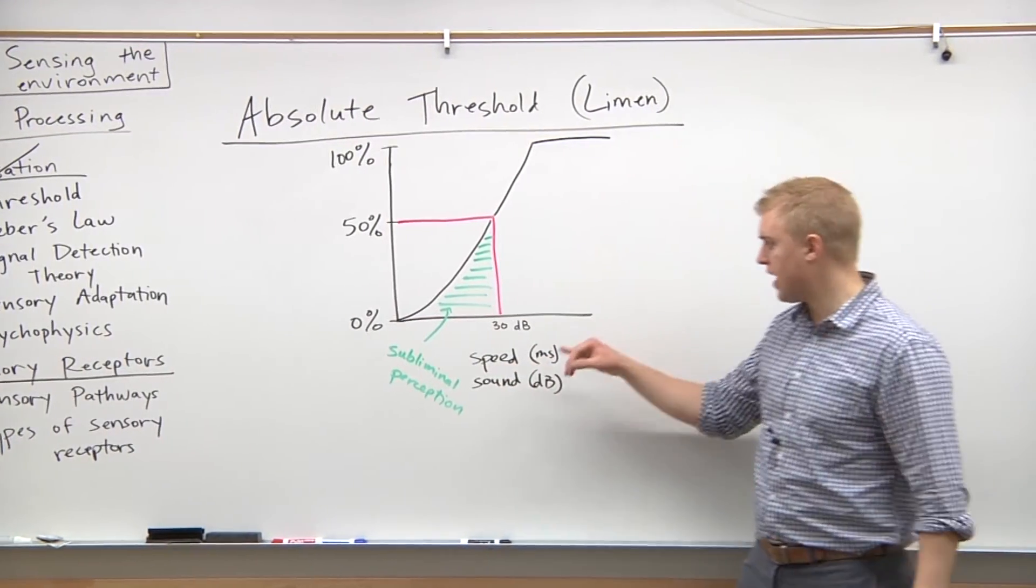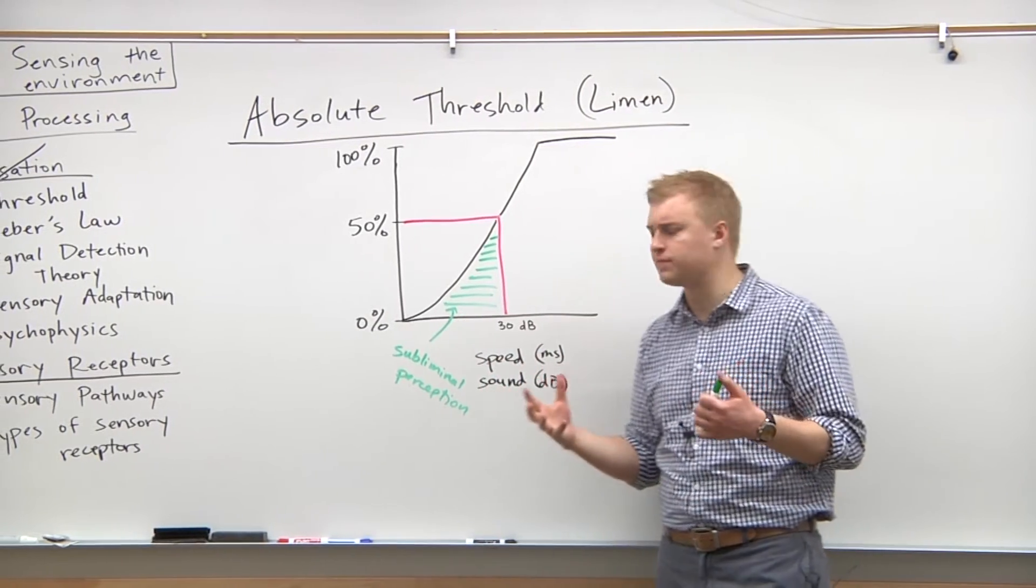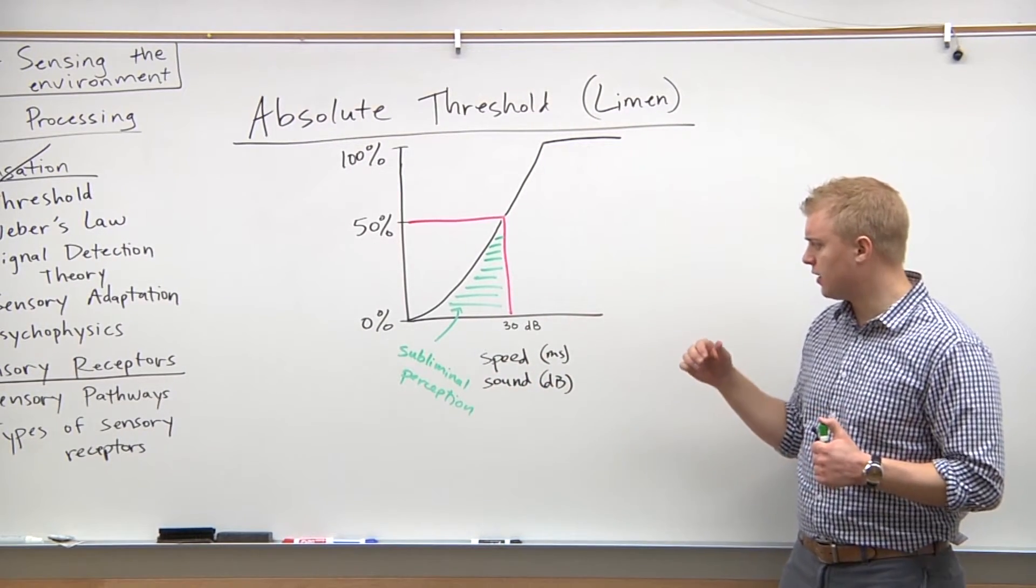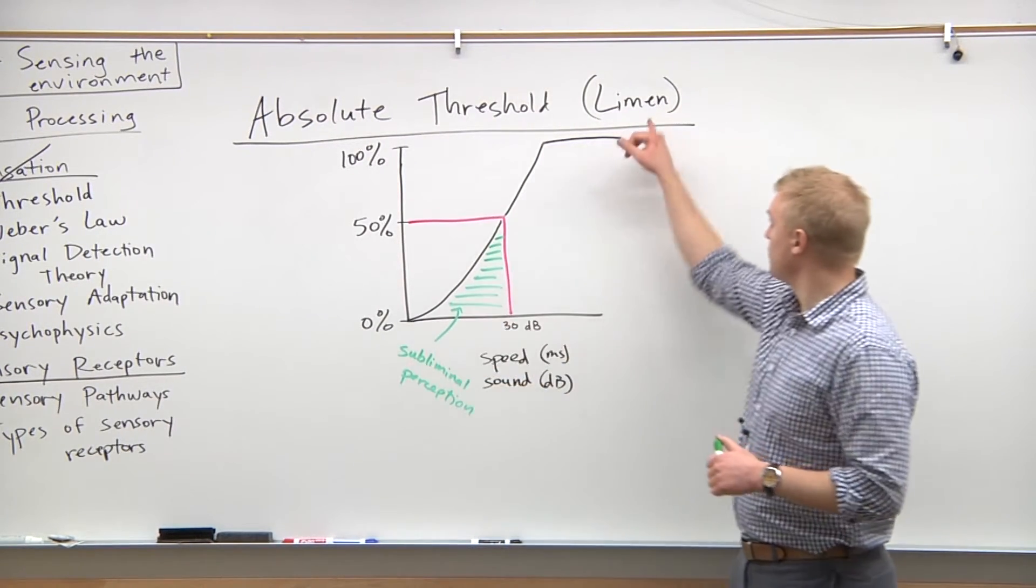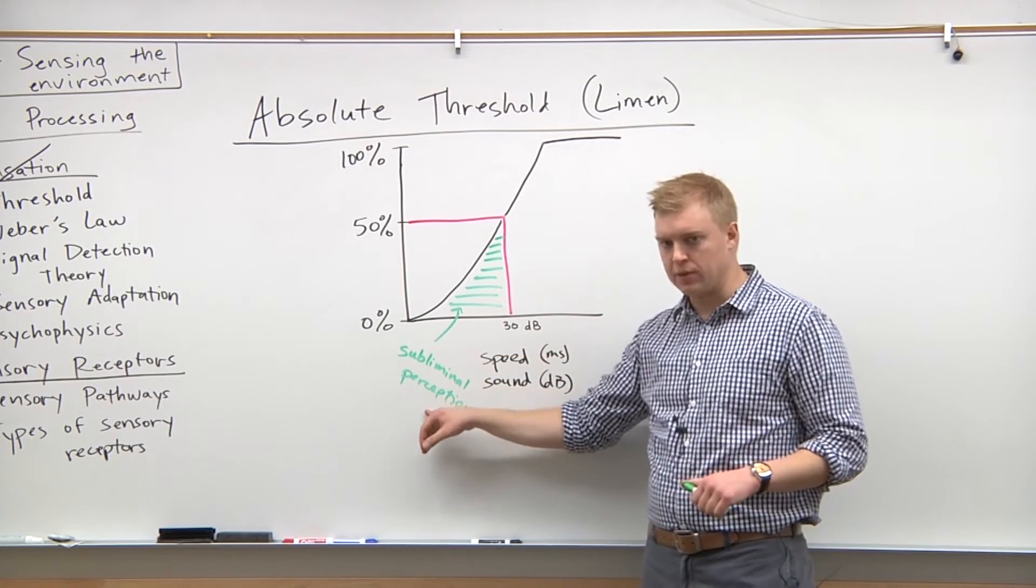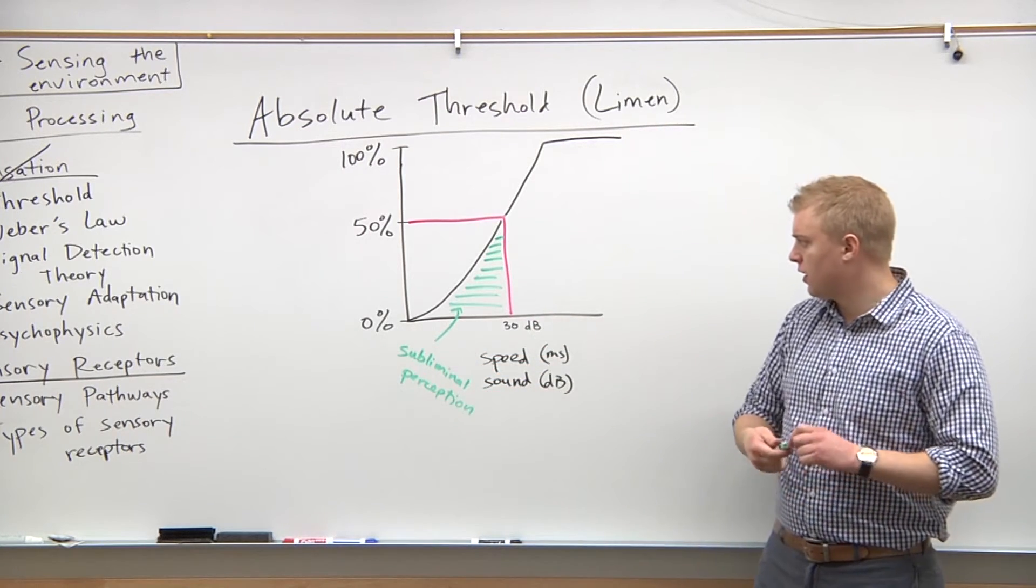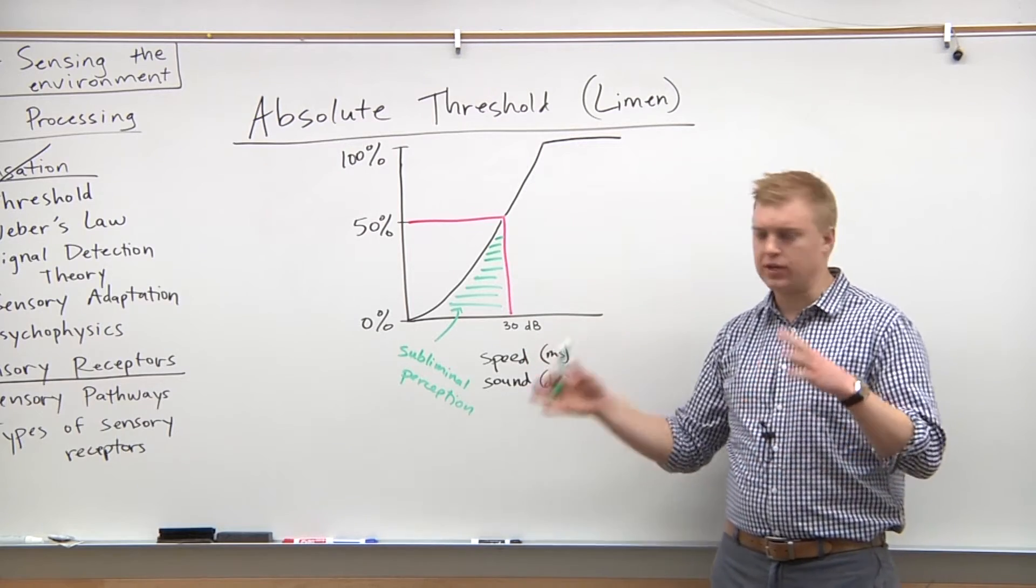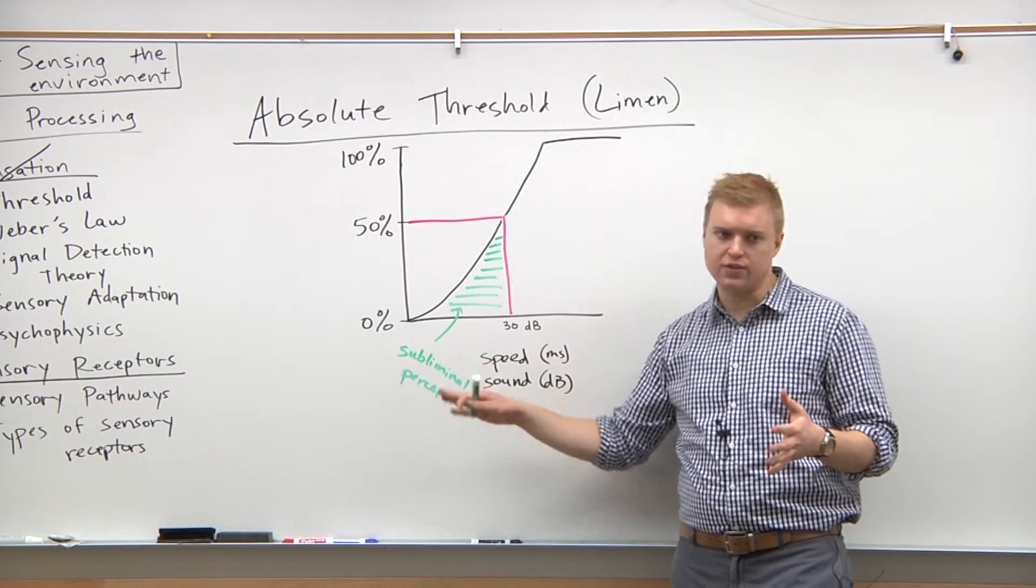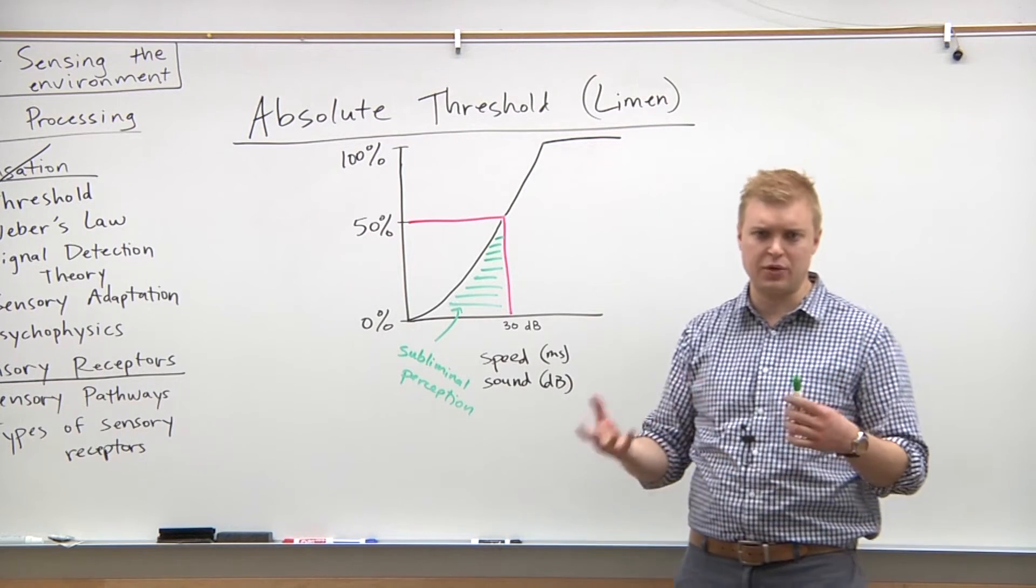So this is where the limen comes in, right? This is below threshold for perception, so this would be anything 49% or less. This correlates with subliminal messages. Subliminal messages are basically messages that are just too short or too subtle.